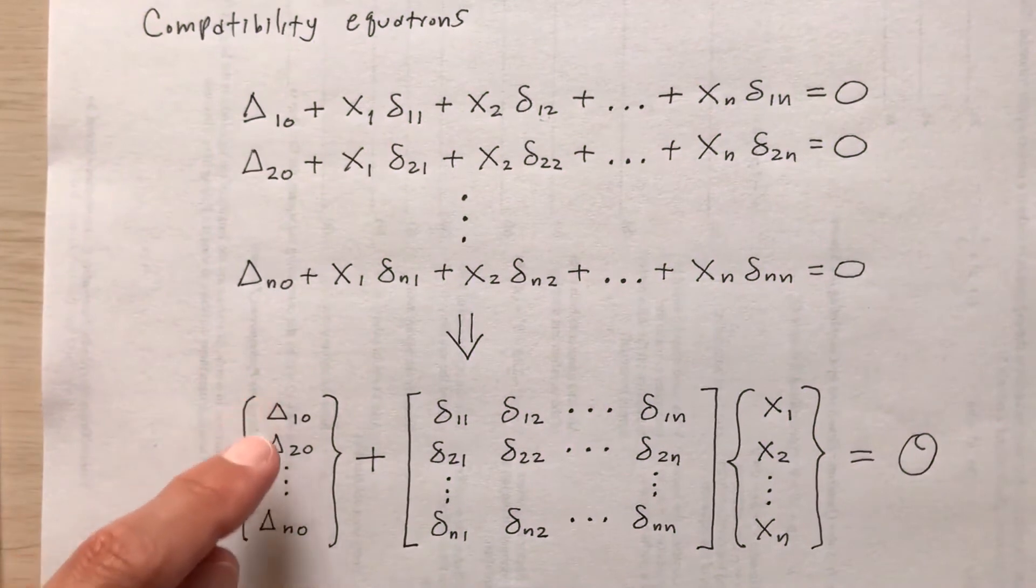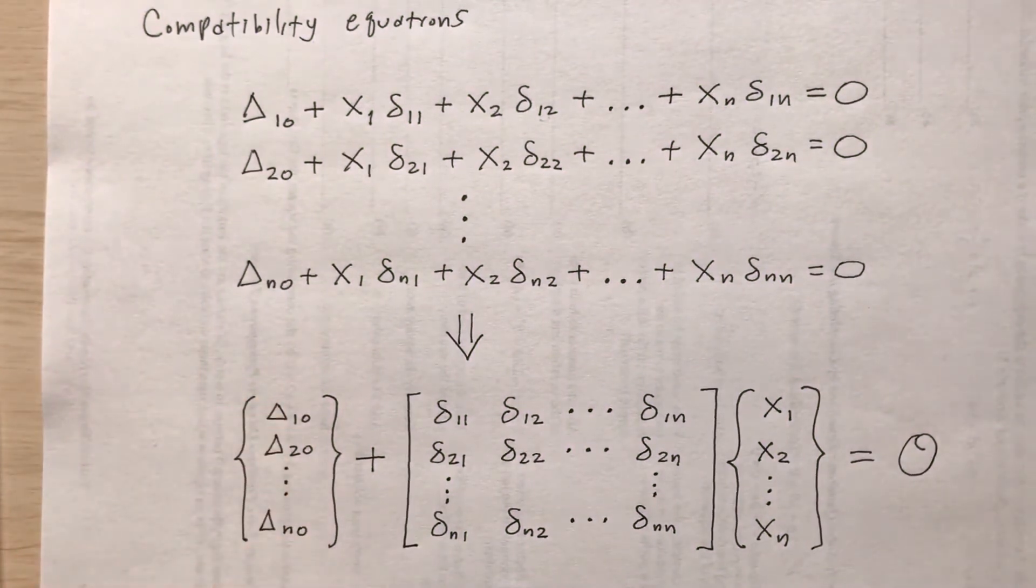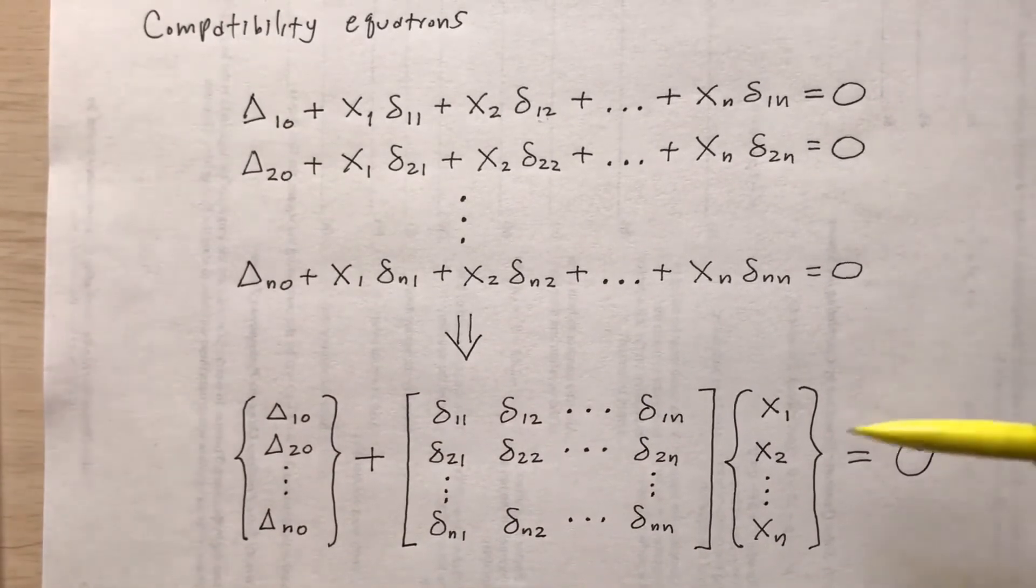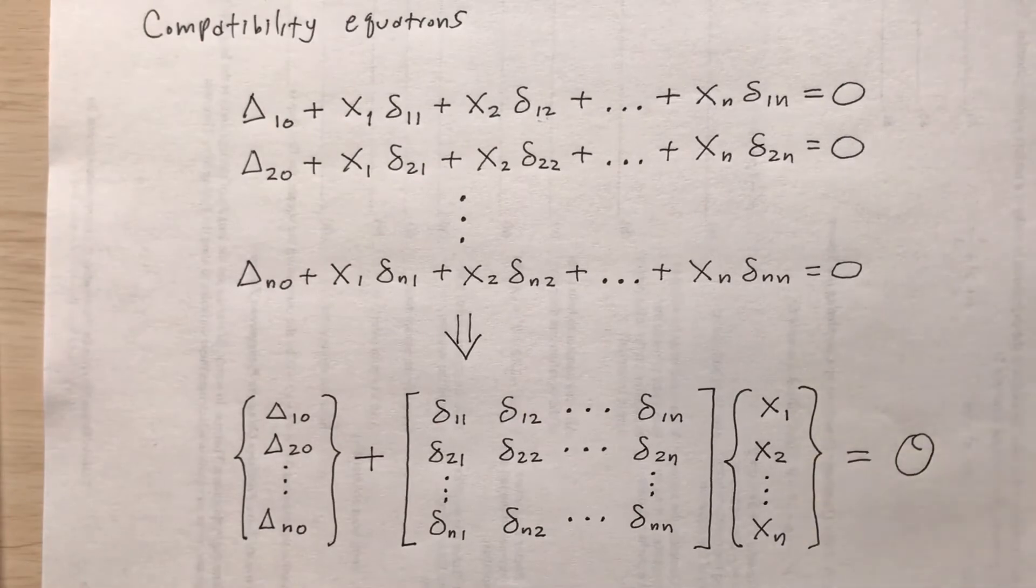Okay, so the deltas, I put all that in a column matrix. The little deltas, the flexibility coefficients, I put that in an n by n square matrix. And then the redundance, another column matrix, x sub 1 through x sub n, and that's equal to the zero vector.